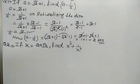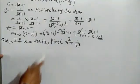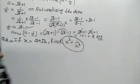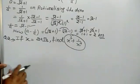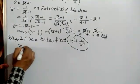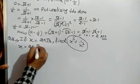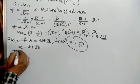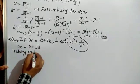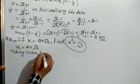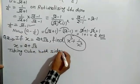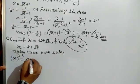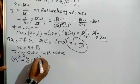Our next question is: x equals 2 + √3. We have to find the value of x³ + 1/x³. Given x = 2 + √3. Here our first part is x³. So taking cube both sides: x³ = (2 + √3)³.